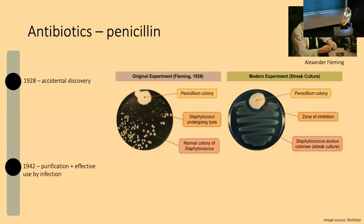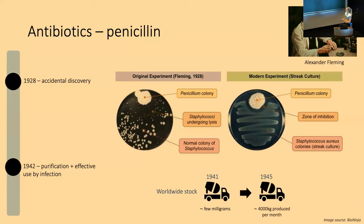In 1942, the purification and effective use of penicillin in injection followed. An interesting statistic: in 1941, the worldwide stock of penicillin was probably around a few milligrams. But by 1945, just four years later, around 4,000 kilograms of penicillin were being produced per month. A lot of this was driven by its use in World War II.